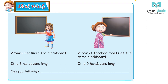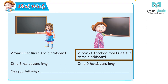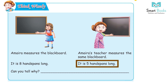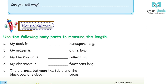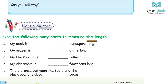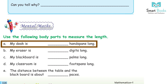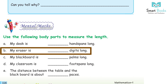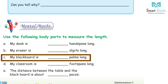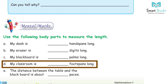Think wisely: Amaira measures the blackboard and finds it is eight hand spans long. Her teacher measures the same blackboard and finds it is five hand spans long. Can you tell why? Mental Maths: Use the following body parts to measure lengths. My desk is dash hand spans long. My eraser is dash digits long. My blackboard is dash palms long. My classroom is dash foot spans long.